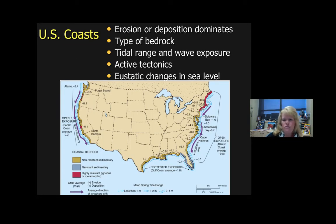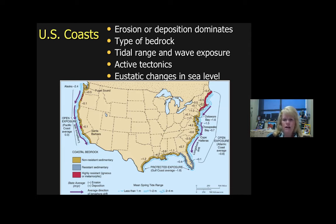Our US coasts have two different types of personalities, based on the types of currents, the bedrock being impacted by wave action, the amount of tidal range, and whether it's a passive or active continental shelf.